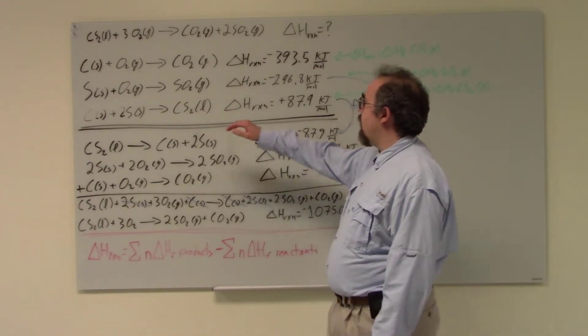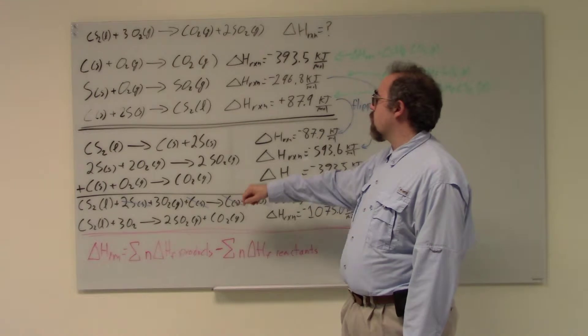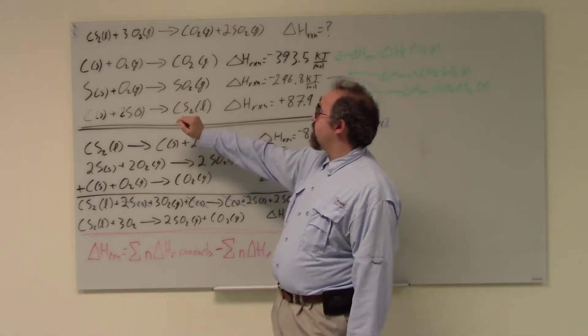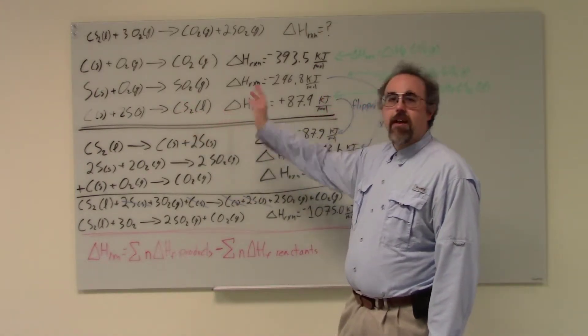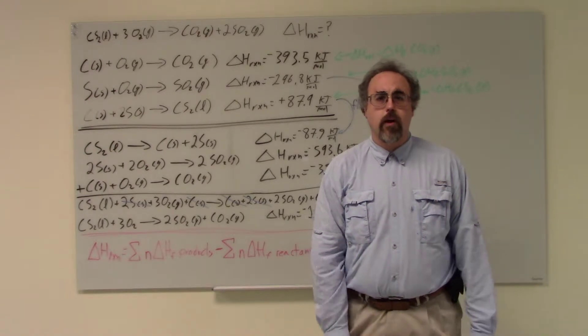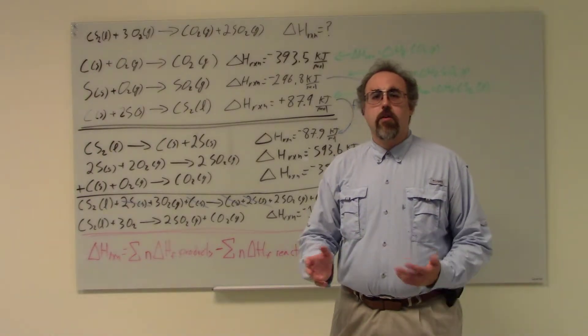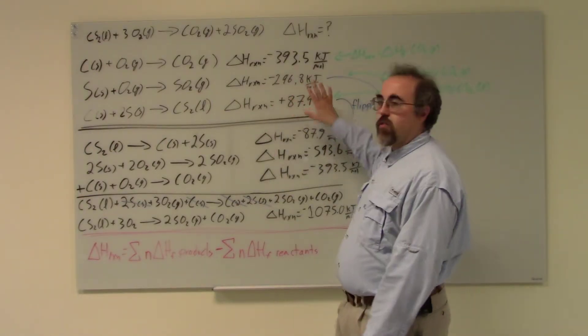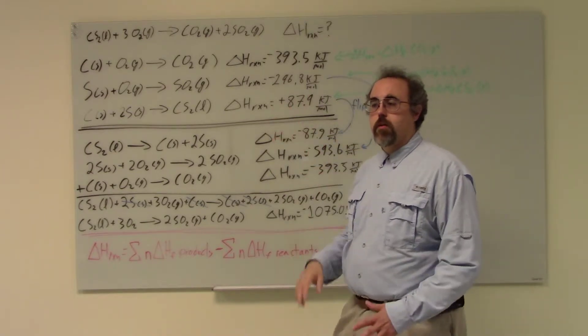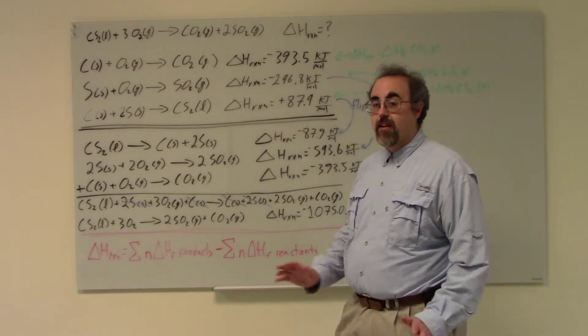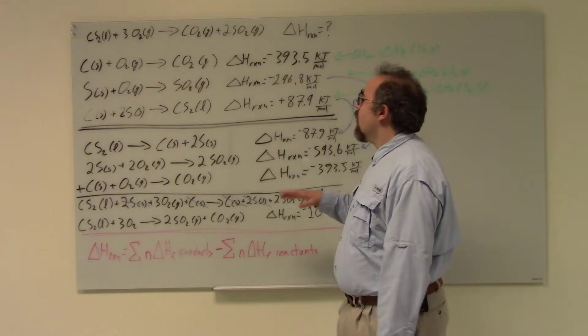You're like, wait, what? Well, chemical reactions can be added. So if I take these three reactions, they have all of the players involved in my top reaction, and I happen to know their delta H. Now, how do I add them? Well, for starters, let's start kind of in reverse order.